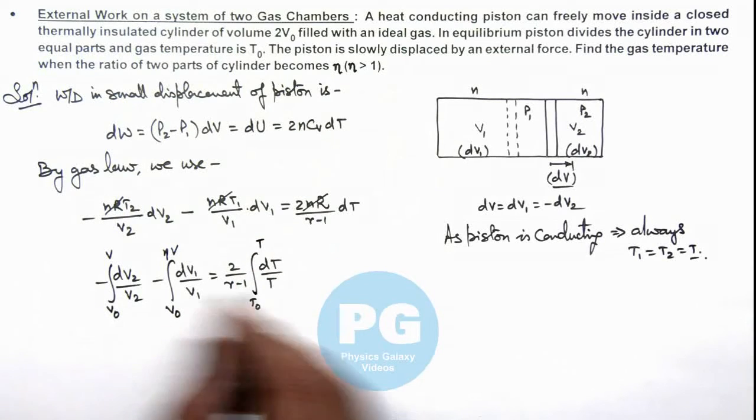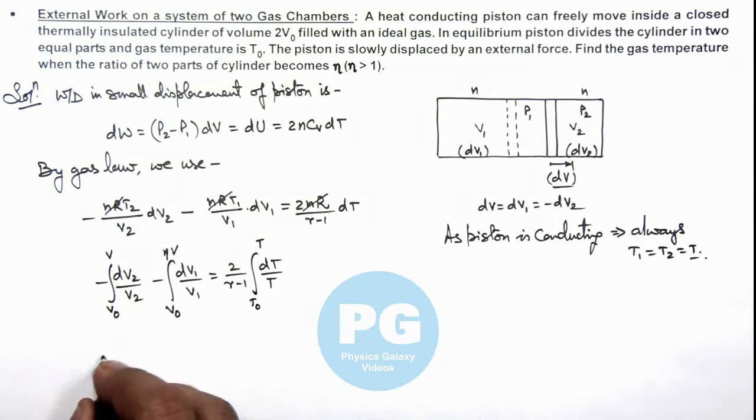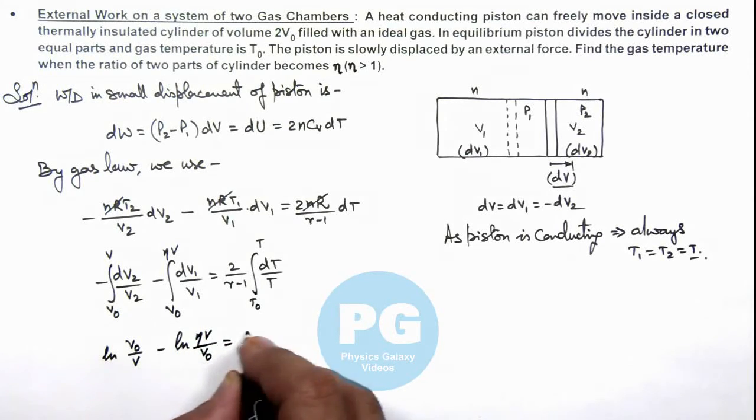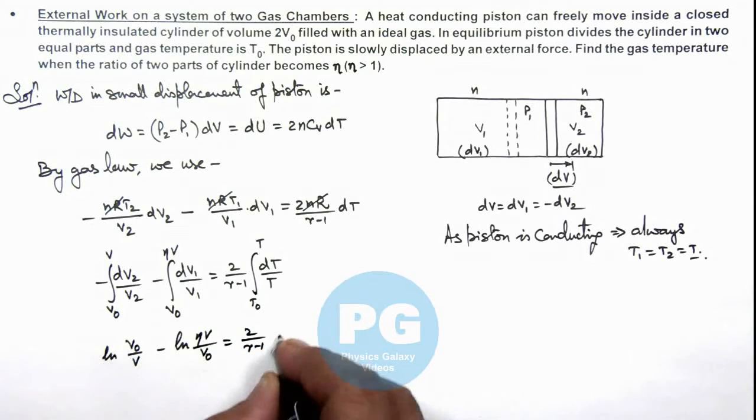Now if we integrate this value here, it gives ln(V₀/V) minus ln(ηV/V₀) is equal to 2/(γ-1) times ln(T/T₀).